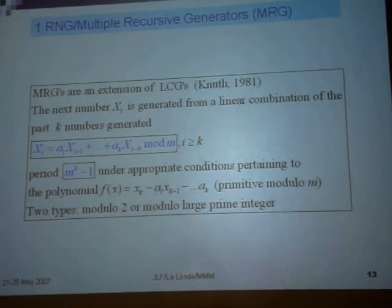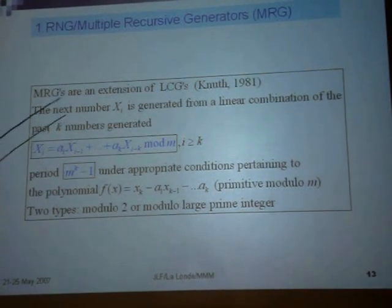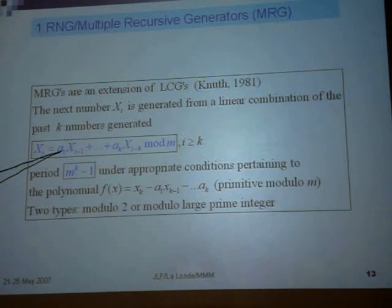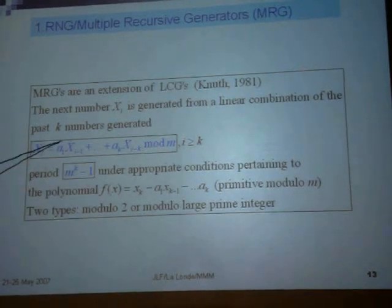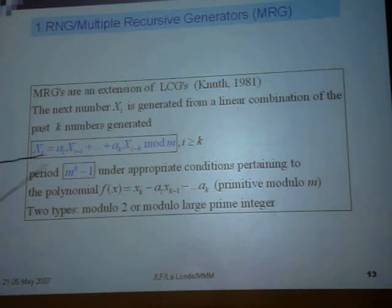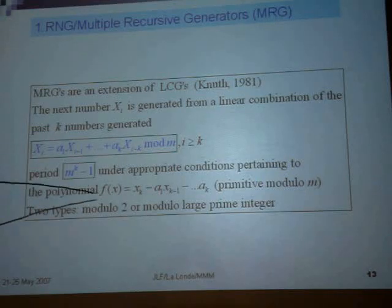So the next step uses the same principle, but instead of producing the next number from the previous one, you produce it from a linear combination of the k previous numbers. So you have a vector space with k elements, and you multiply them by different coefficients a1 to ak. You add all of these, divide by m, and take the remainder. And if you do that, you can increase your period a lot. Your period, under appropriate conditions on the polynomial, could be as large as n to the power of k minus 1. Such generators are either modulo 2 or modulo a large prime.